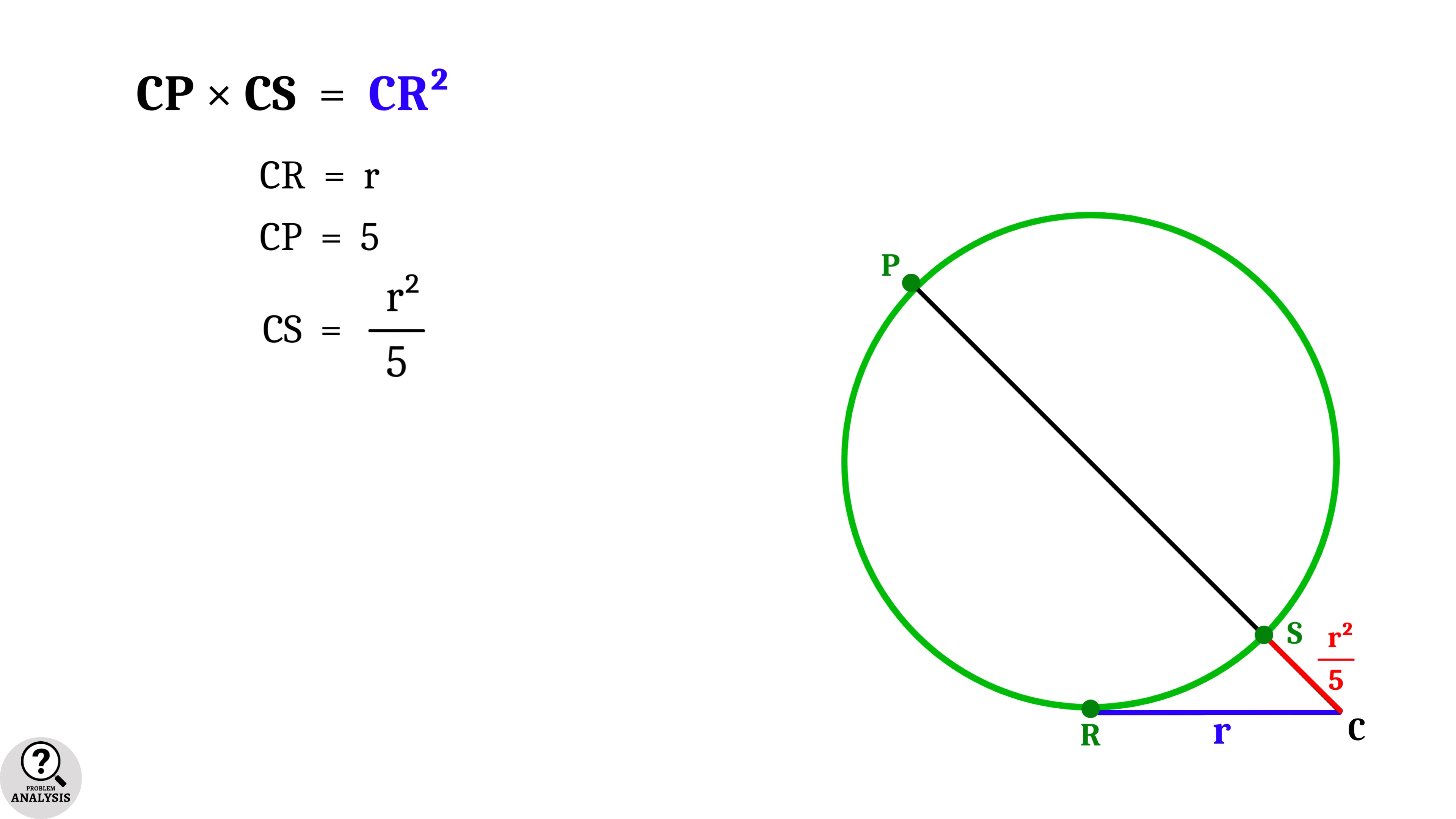Now one more thing we can notice is that the length PS is actually a diameter of the circle. Therefore, PS is equal to 2 times r. Hence CP equal to 2r plus r square by 5 which is equal to 5.